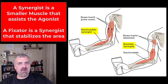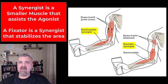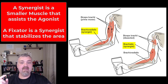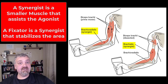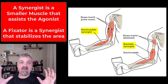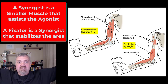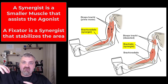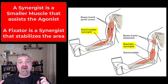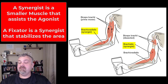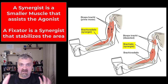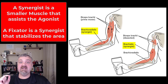We usually only call one muscle the agonist or prime mover. Other muscles that have the same action are going to be called synergists. The brachioradialis and brachialis are both called synergists — smaller muscles that assist the prime mover, the biceps. Sometimes they initiate the movement; for example, in shoulder abduction the deltoid is the prime mover, but the supraspinatus, one of your rotator cuff muscles, initiates the action, so it would be a synergist. Other synergists stabilize an area so the prime mover can do its job — those are called fixators.